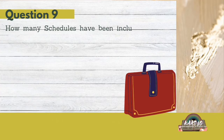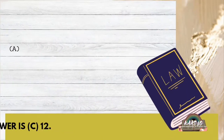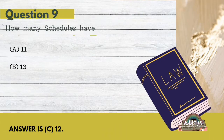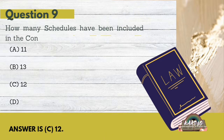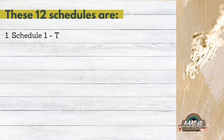Question 9: How many schedules have been included in the Constitution of India? A. 11, B. 13, C. 12, D. 14. The correct answer is C. 12.